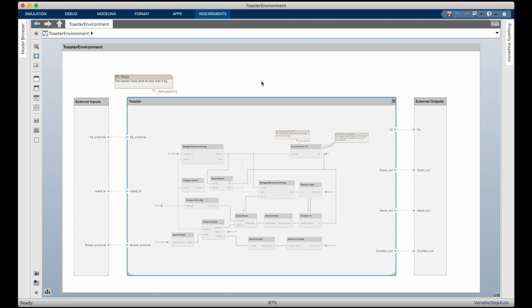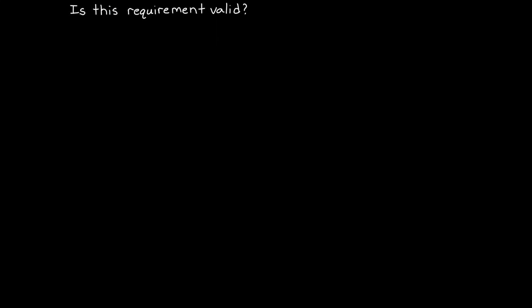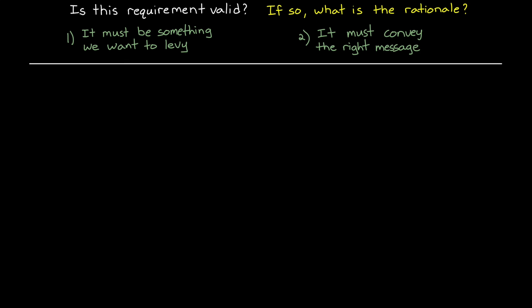But beyond just the description and the verification method, we also have to think about their validity. That is, are these requirements valid? And if so, what is the rationale for each of them? There are two broad categories that a requirement must satisfy in order for it to be valid. Firstly, the requirement must be something that we actually want to levy on the system. And secondly, the requirement must be written in a way that conveys the right message. Let's dive into both of these.